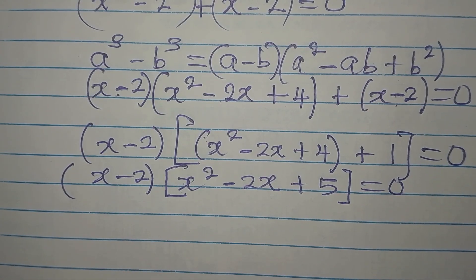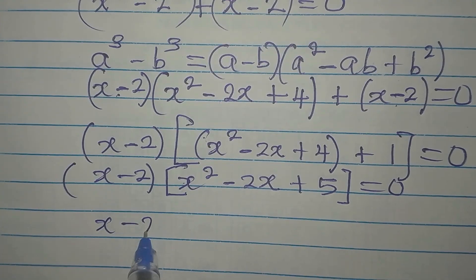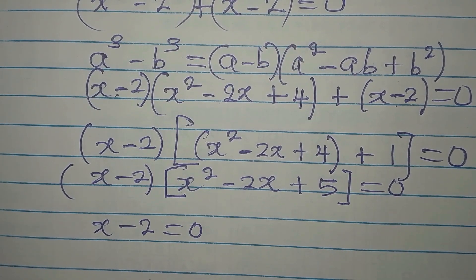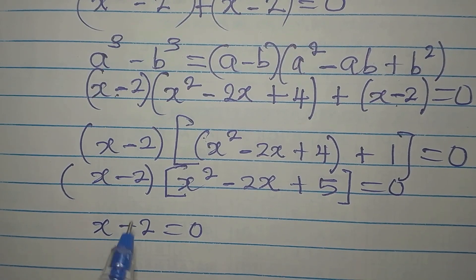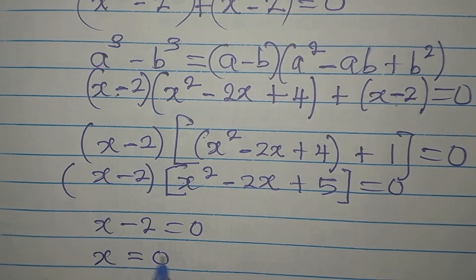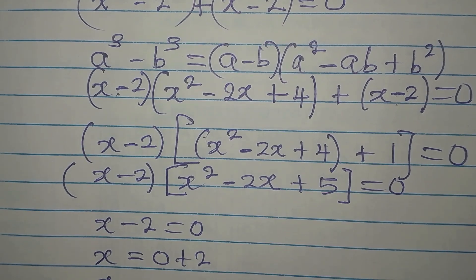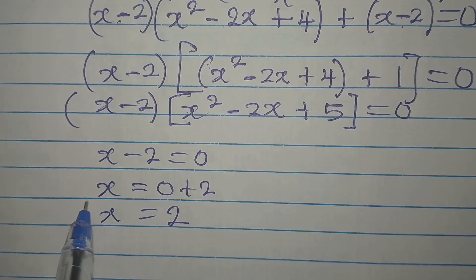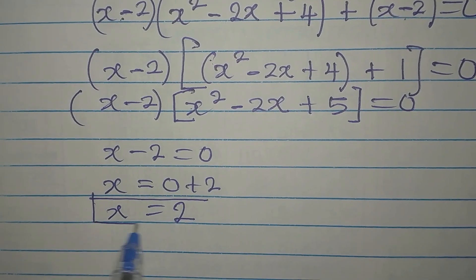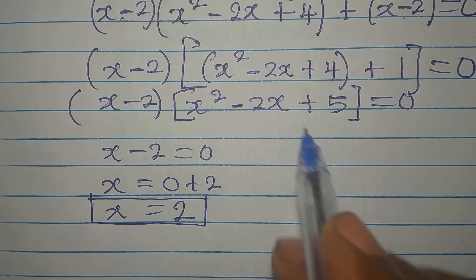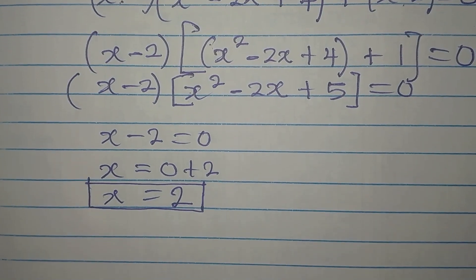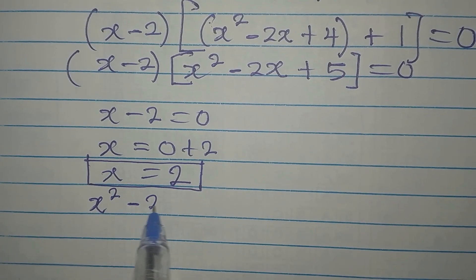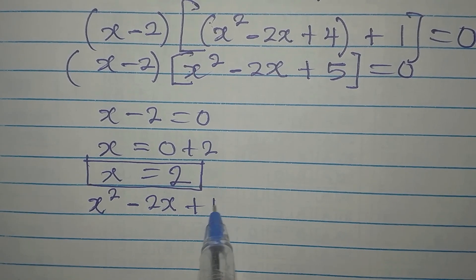To proceed, we set each factor equal to zero. From X - 2 = 0, we get X = 2. That is one solution. Then we take X² - 2X + 5 = 0 and apply the quadratic formula.